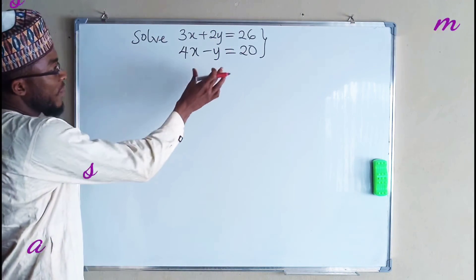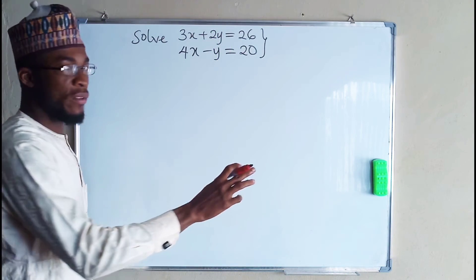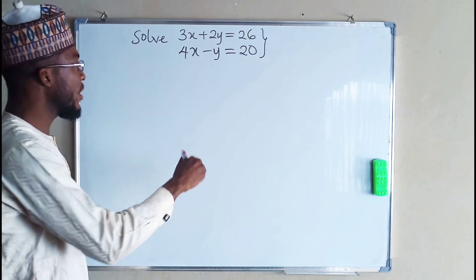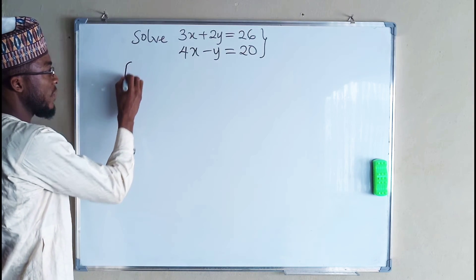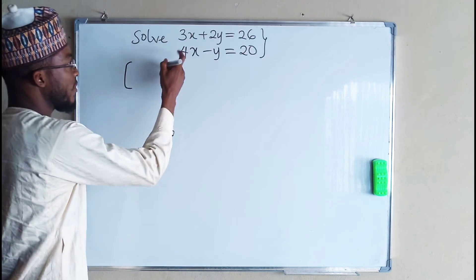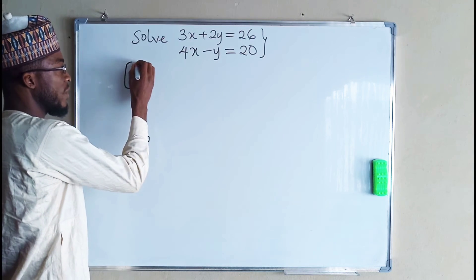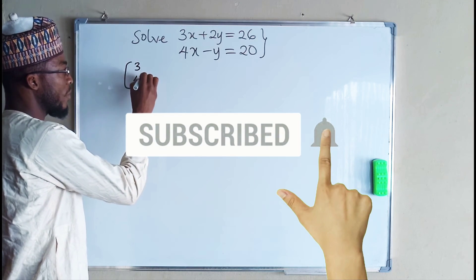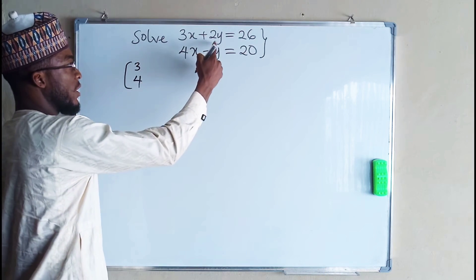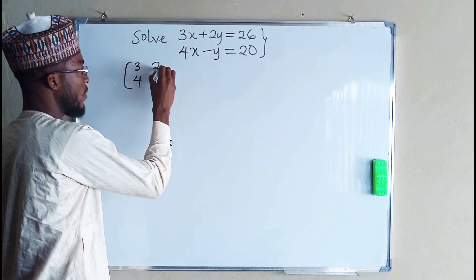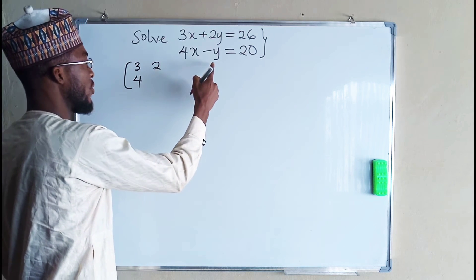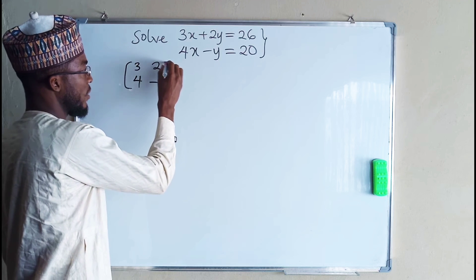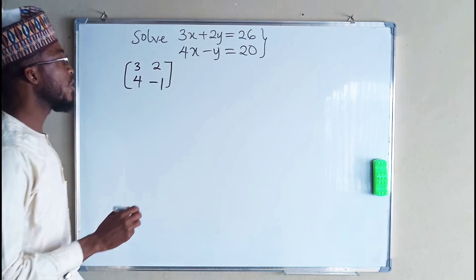To solve this, you first form a matrix of the coefficients of the unknown variables. The coefficient of x in the first equation is 3, and the coefficient of x in the second equation is 4. Then the coefficient of y in the first equation is 2, and the coefficient of y in the second equation is negative 1. So this is the matrix of the coefficients.